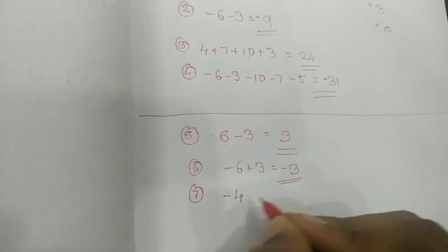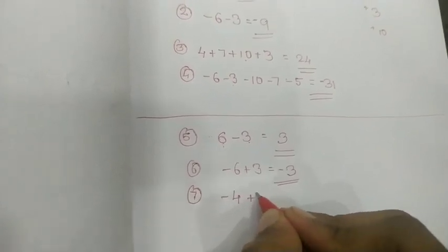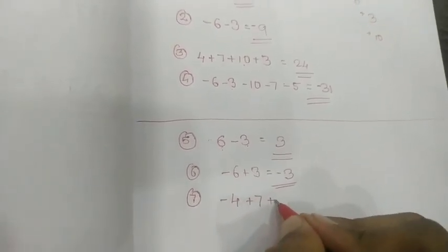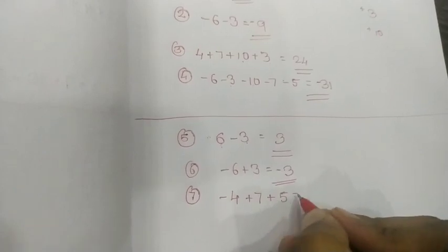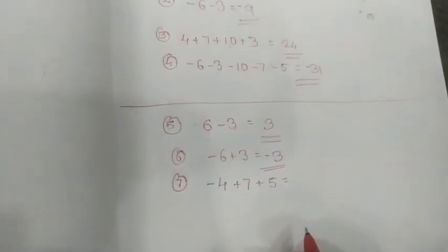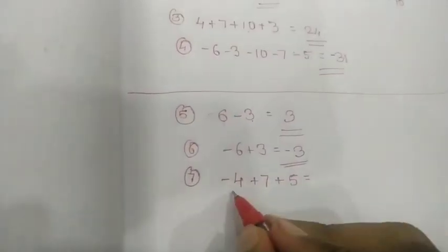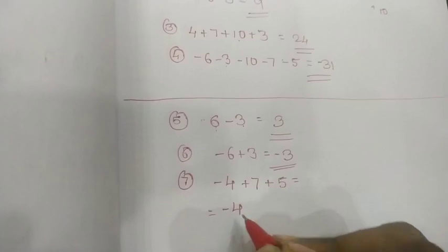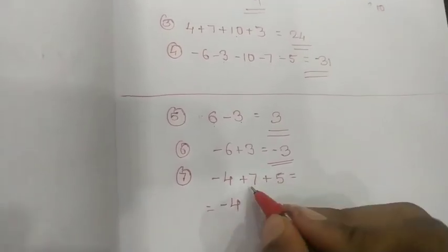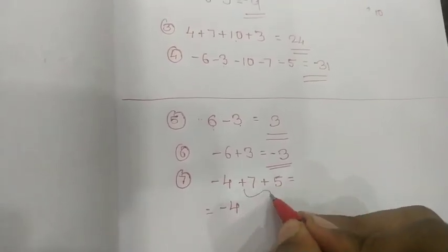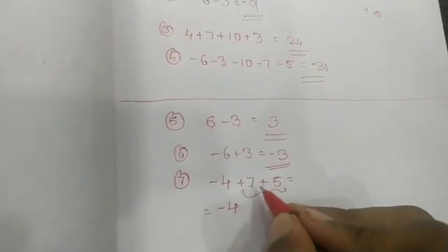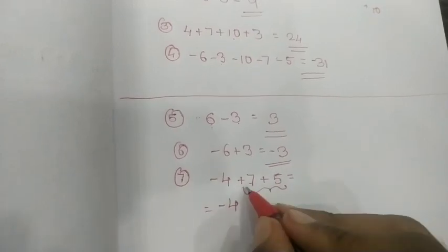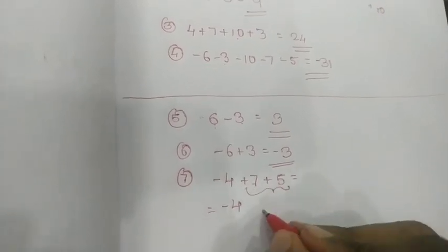Here we go. Minus four plus eight plus five. Now we have minus four. We are going to add two, then we will add two plus. Then 12.